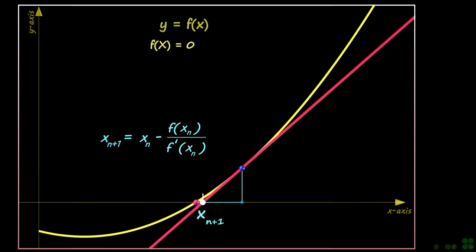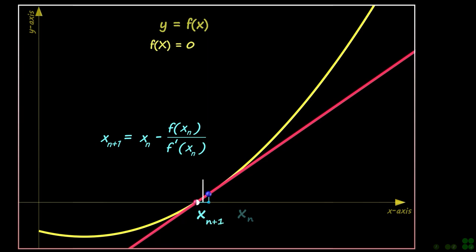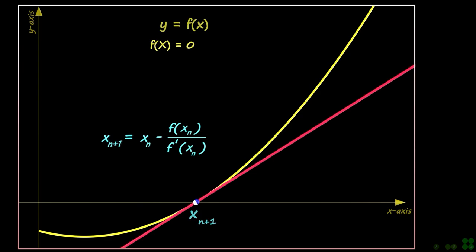Now we can repeat the same process again to find the new x-position where this tangent line crosses the x-axis. A few repetitions of this process can take us closer to the solution value in a couple of steps. This equation is known as the iterative equation for Newton's method.